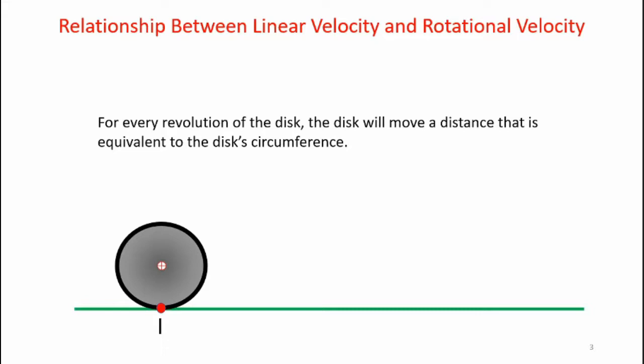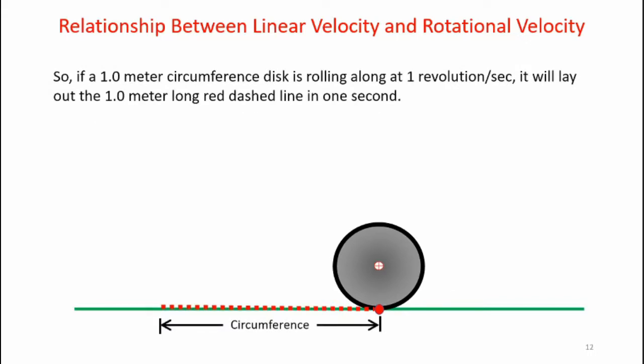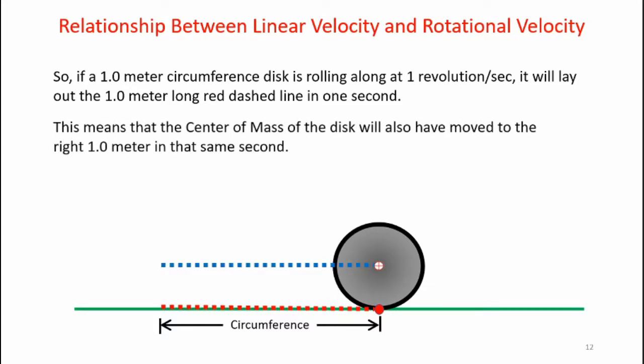The first thing we need to look at is the relationship between linear velocity and rotational velocity. Here I have an animation of a disc and I'm going to roll it across the floor towards the right. For every revolution of the disc, the disc will move a distance that is equivalent to the disc's circumference. If a one meter circumference disc is rolling along at one revolution per second, it will lay out the one meter long red dashed line in one second.